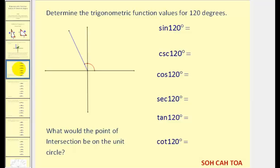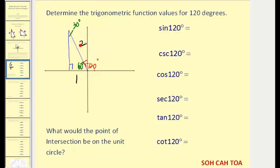The triangle formed by theta prime can be used to find the values of the six trigonometric function values of theta, or in this case, 120 degrees. We form our reference triangle with a segment to the closest part of the x-axis. Since the angle is 120 degrees, the reference angle would be 60 degrees, and the remaining angle would be 30 degrees. So we have a 30-60-90 triangle with sides one, two, and square root of three. Note that the x-coordinate of the point is negative one, while the y-coordinate is positive square root of three.